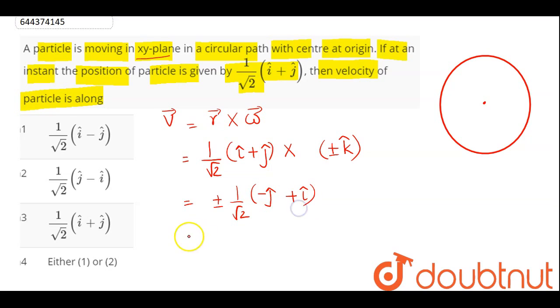So this here simplifies as plus minus 1 by root 2, i cap minus j cap. So our velocity can either be 1 by root 2, i minus j or 1 by root 2, j minus i.